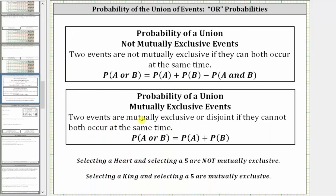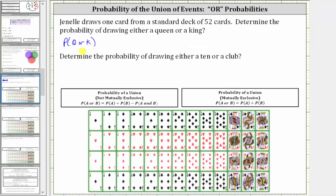Two events are mutually exclusive or disjoint if they cannot occur at the same time. When this is the case, we can find the probability of A or B by determining the sum of the probability of A and the probability of B. So because a card cannot be both a queen and a king at the same time, the probability of a queen or a king equals the probability of a queen plus the probability of a king.